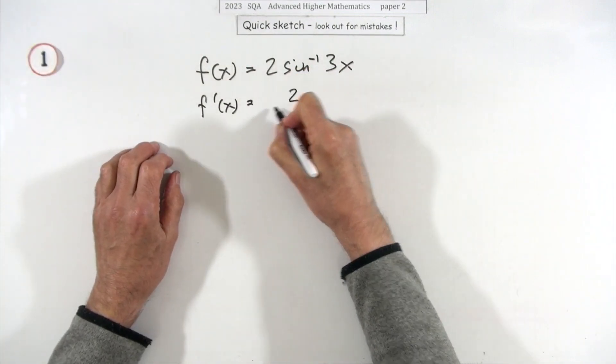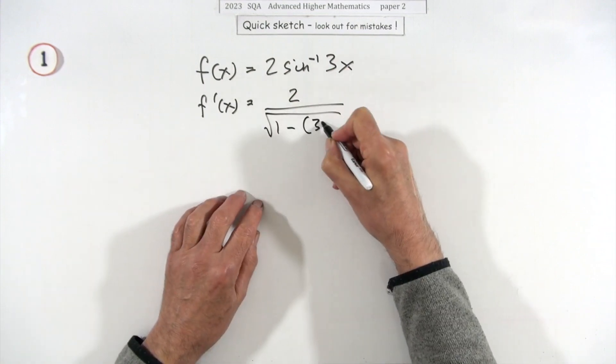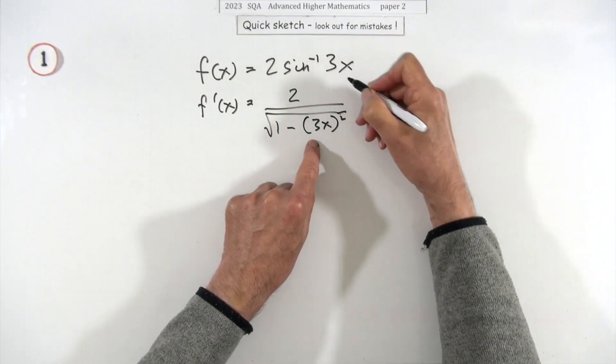That'll be 2sin⁻¹, so I'll just put the 2 up there. That goes to 1 over the square root of 1 minus whatever. So that will be the 3x² multiplied by the derivative of that inner function.